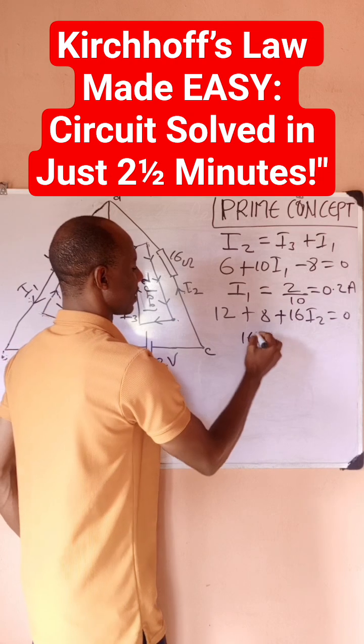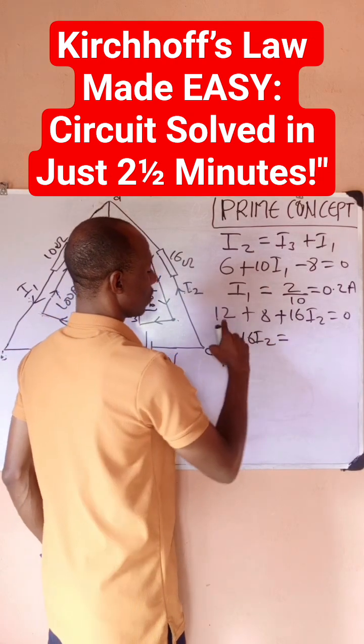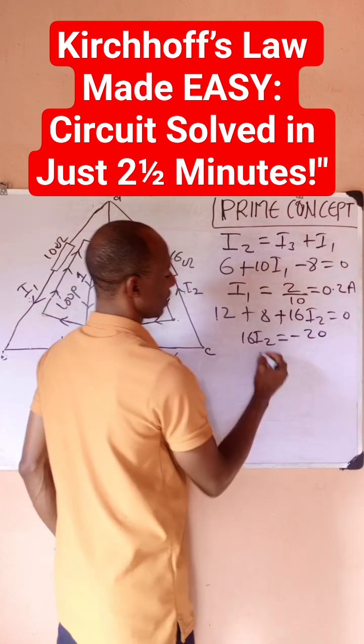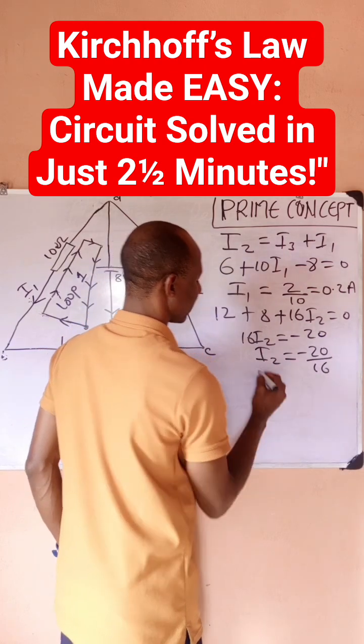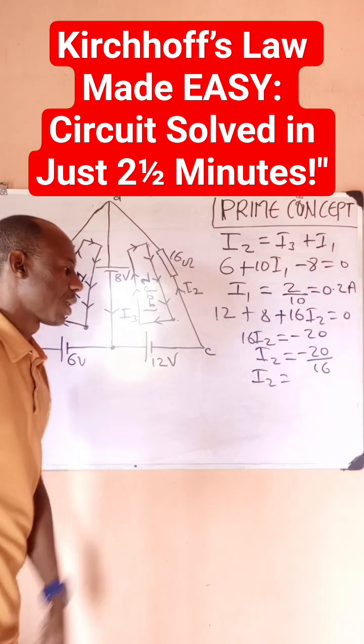If I solve again, I have 16 I2 equals, this plus this is 20, so I have minus 20. So I2 becomes minus 20 divided by 16, and I2 becomes minus 1.25 amperes.